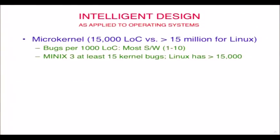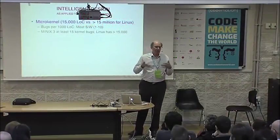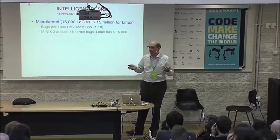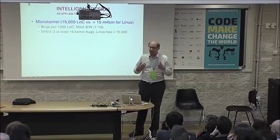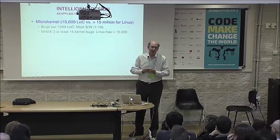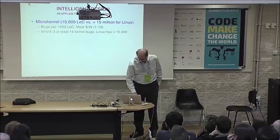So if we have 15,000 lines of code, we probably have 15 kernel bugs. Linux probably has 15,000 kernel bugs, and Windows probably has 100,000 kernel bugs. They're not all serious — some are a spelling error in a message or something — but some could be serious, and some are weird race conditions. Human beings write the code, they make mistakes, and this stuff is tricky. Operating systems are especially tricky.